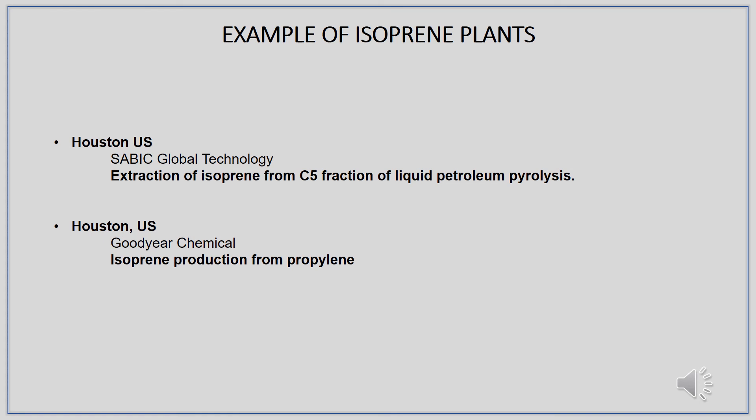Moving on to examples of isoprene plants: both isoprene producers using extraction from C5 fraction of liquid petroleum pyrolysis are located in Houston, US, and are produced by CABIC Global Technology. For isoprene production from propylene, Goodyear Chemical in the US is the producer. That's all for our presentation. Thank you for listening.